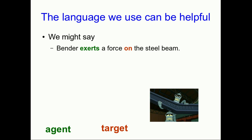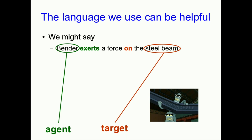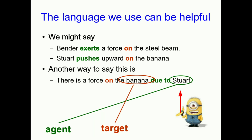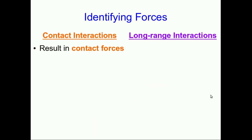This language is important and I encourage you to use it carefully. For example, we might say that Bender exerts a force on the steel beam — Bender is the agent, the steel beam is the target. Or that Stuart is pushing up on a banana — Stuart is the agent, the banana is the target. We could also say there is a force on the banana due to Stuart. Phrases should make clear what physical thing is the agent and what is the target. Your first task whenever you're thinking about forces is to identify all the forces that exist — and that's not a trivial skill; it takes practice.